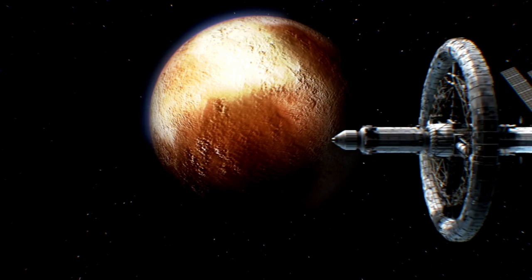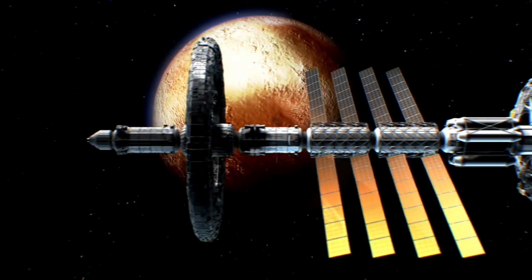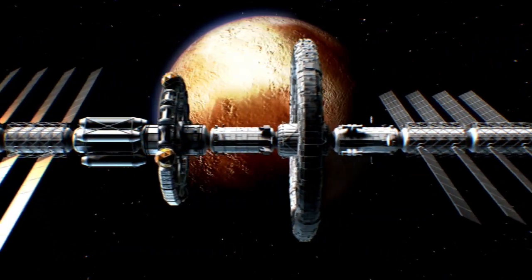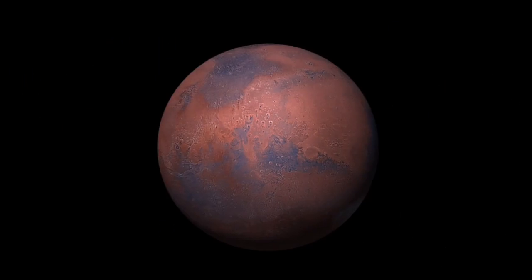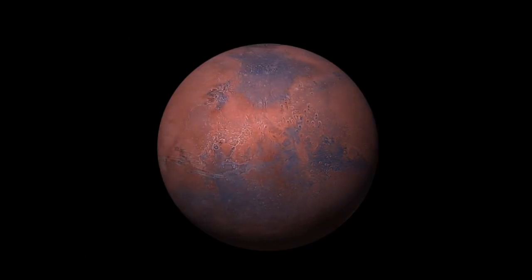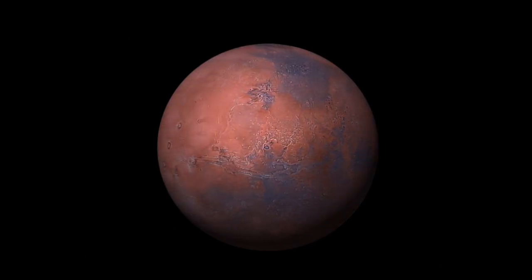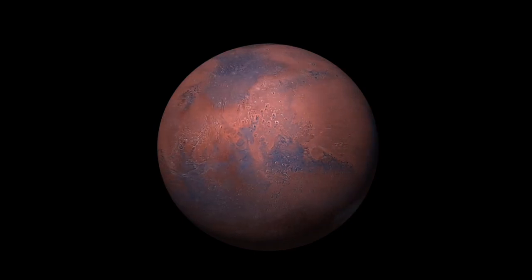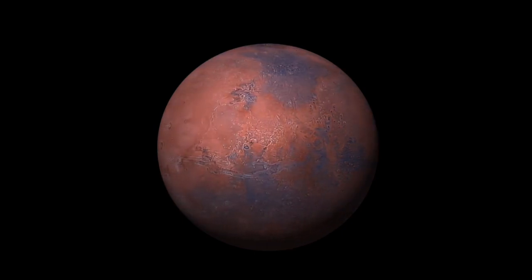Though Proxima b receives sunlight comparable to Earth's, its closeness to a red dwarf star exposes it to volatile radiation and magnetic forces, endangering the stability of any atmosphere. The actual presence of liquid water remains uncertain.